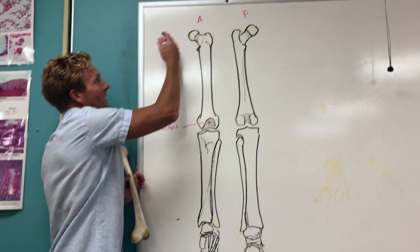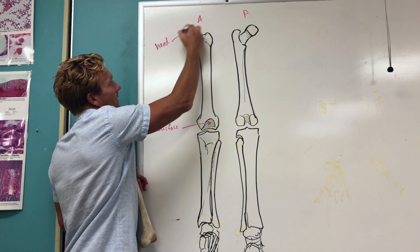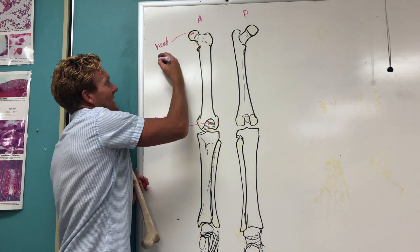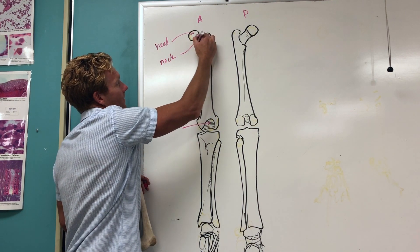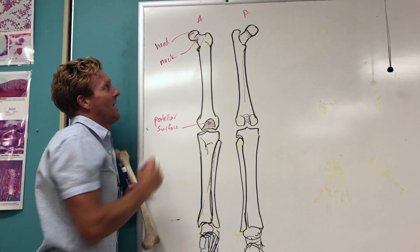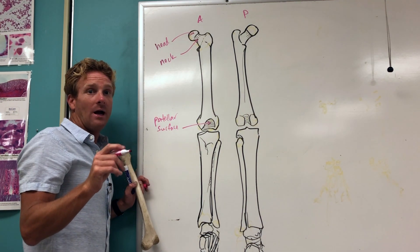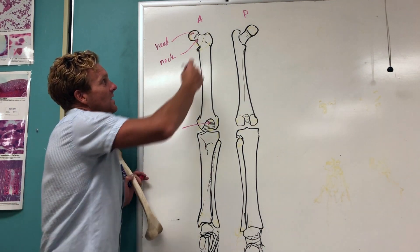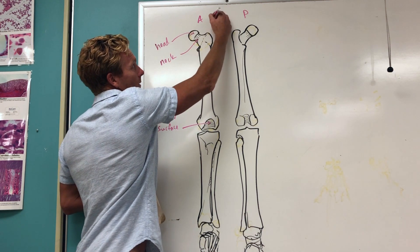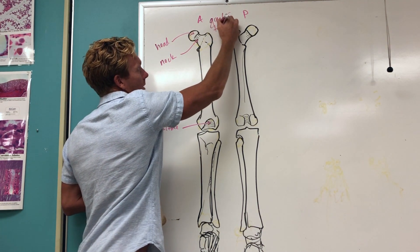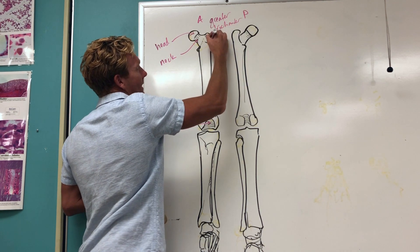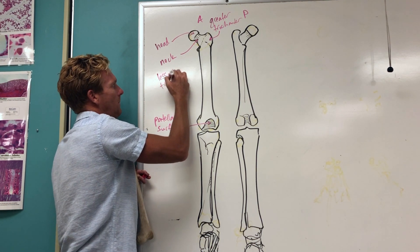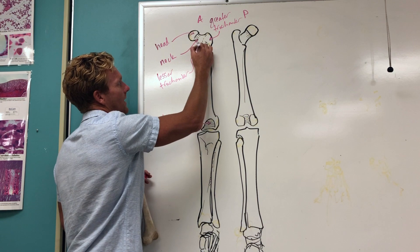If you go to the proximal end of the femur, you're going to have the head of the femur. That's what fits inside the pelvis, or the acetabulum. The head is connected to the neck of the femur right here. And then you're going to have these two pretty pronounced protrusions — those are called the trochanters. The trochanters serve as attachment sites for the hip muscles, like a lot of the adductor and abductor muscles. This one up here is the greater trochanter, and the lesser trochanter is located down below.